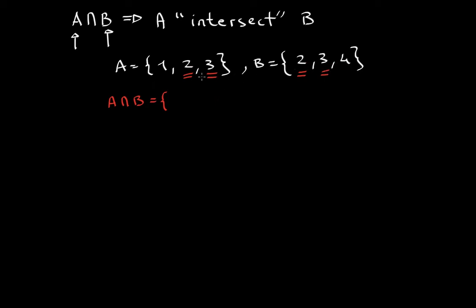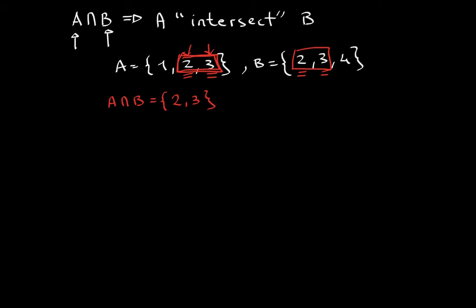Both 2 and 3 are present within both sets. A intersect B basically takes out the specific portion present within both sets — it intersects them. So when asked to write A intersect B, you write the elements present in both sets, which would be {2, 3}. Now it could be something a little more intricate, so let's do another example.